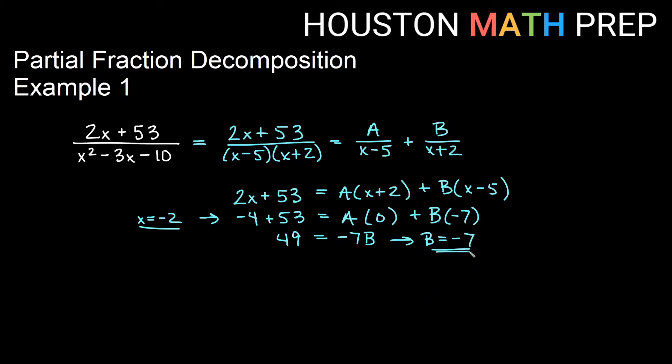Okay, so we've got one of them. We'll go back and go ahead and set the other factor equal to zero. We would do that by using x equal to 5, so we'll set x equal to 5.